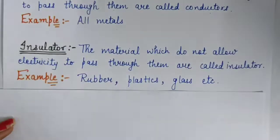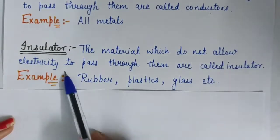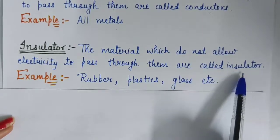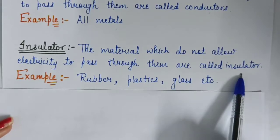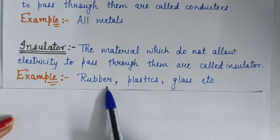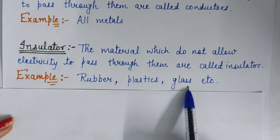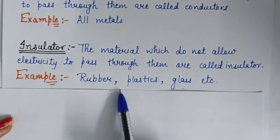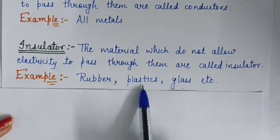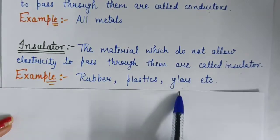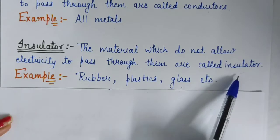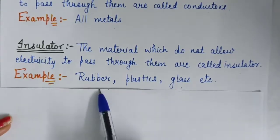On the other hand, the materials which do not allow electricity to pass through them are called insulators. If electricity does not pass through the material, then that material is called an insulator. For example, rubber, plastics, and glass — these materials do not allow electricity to pass through them and are called insulators.